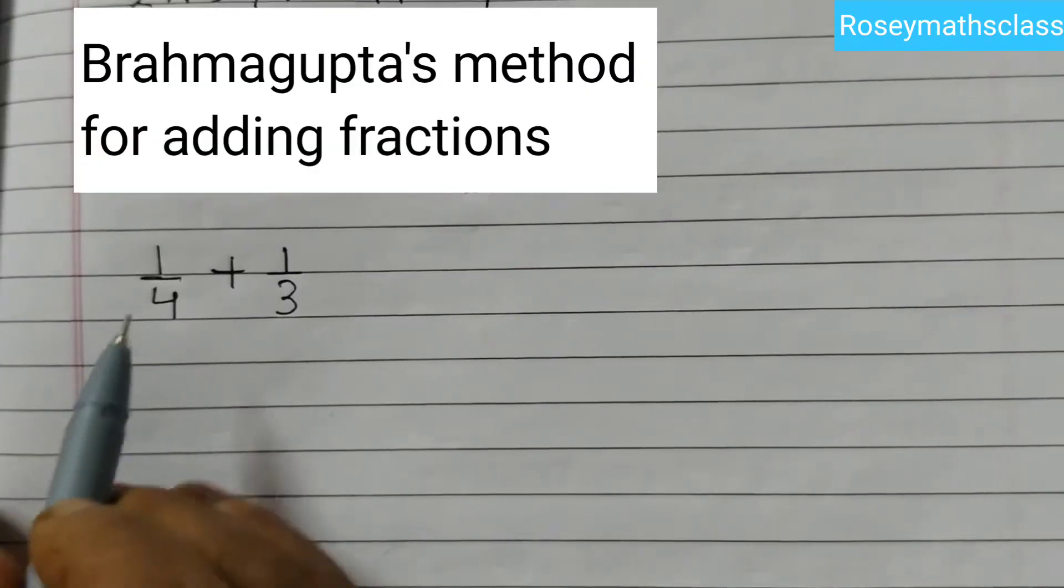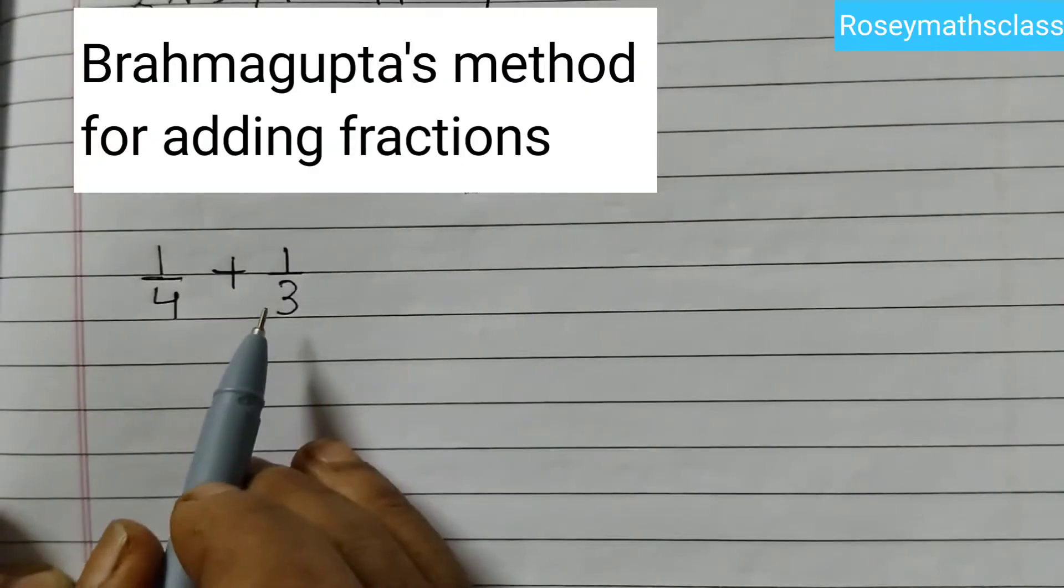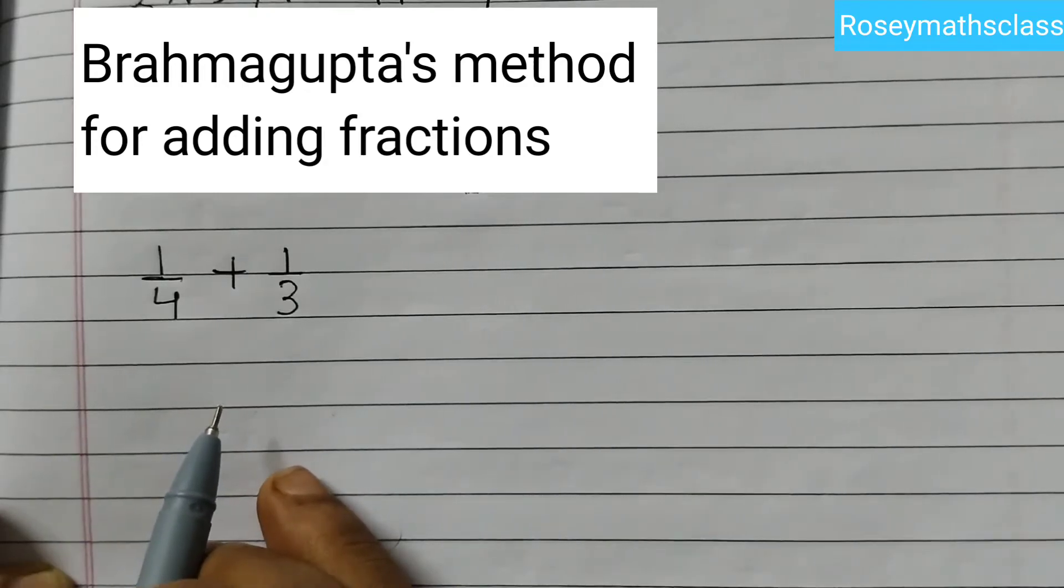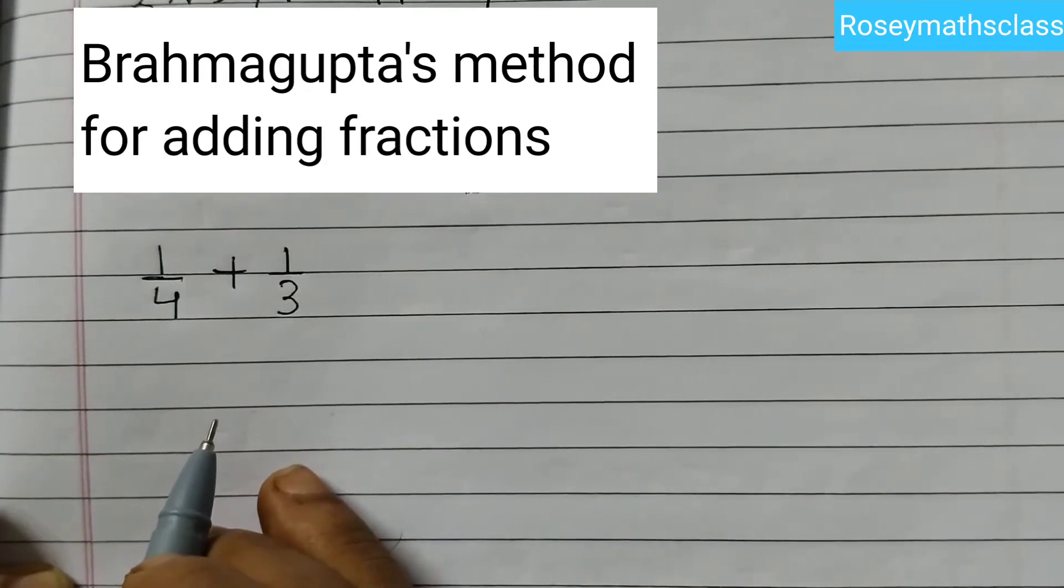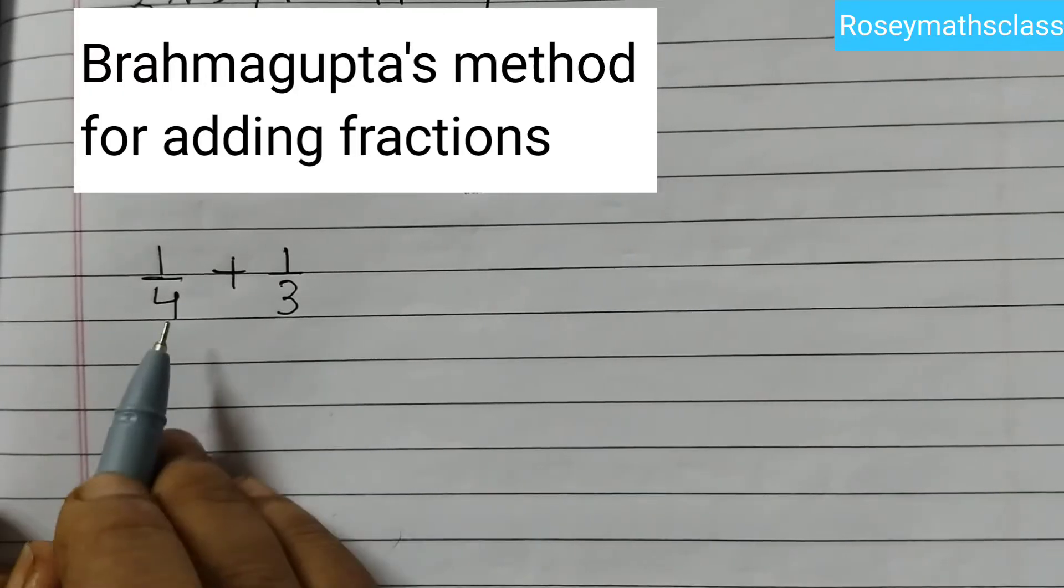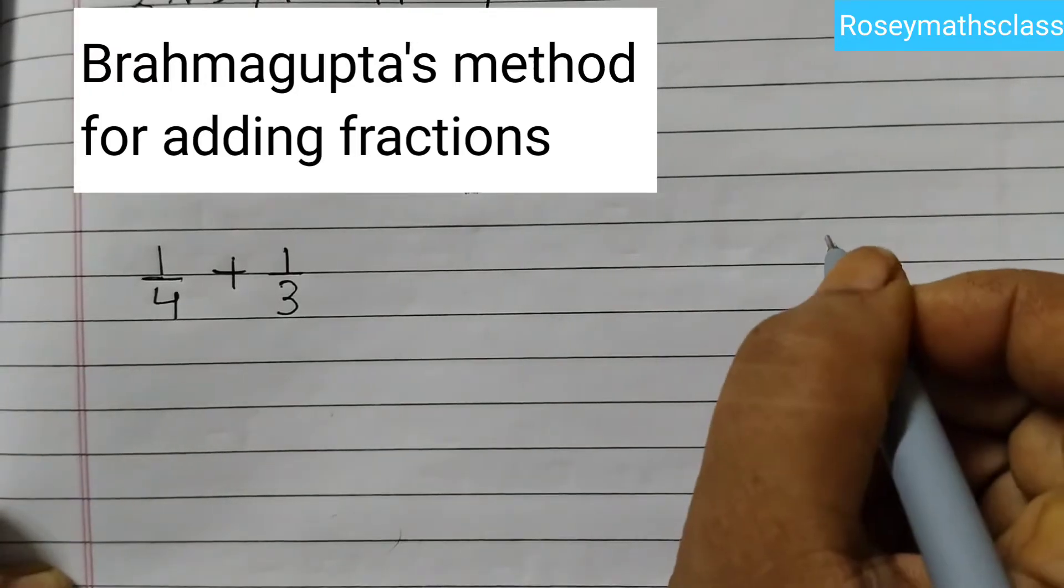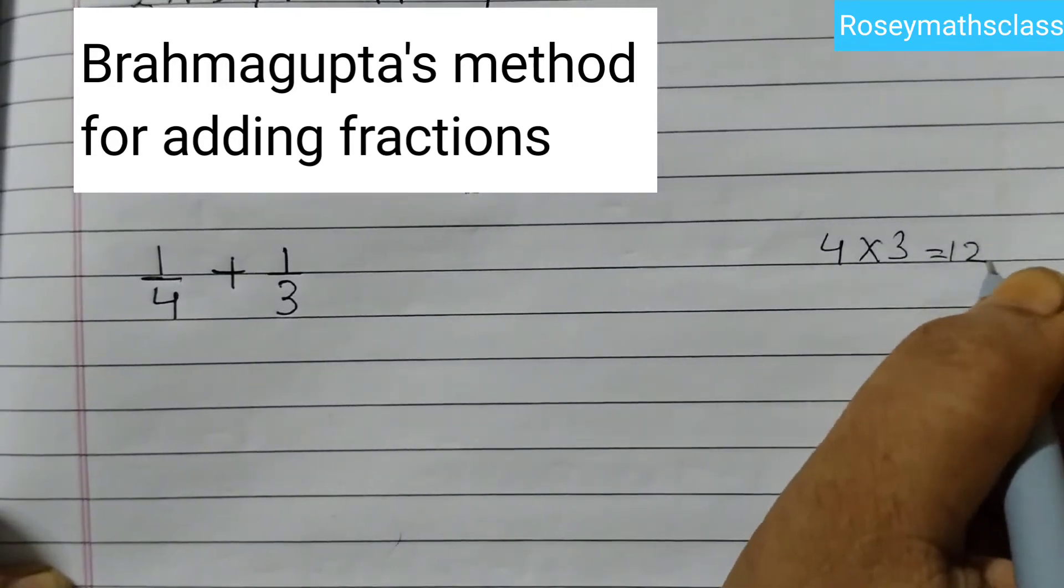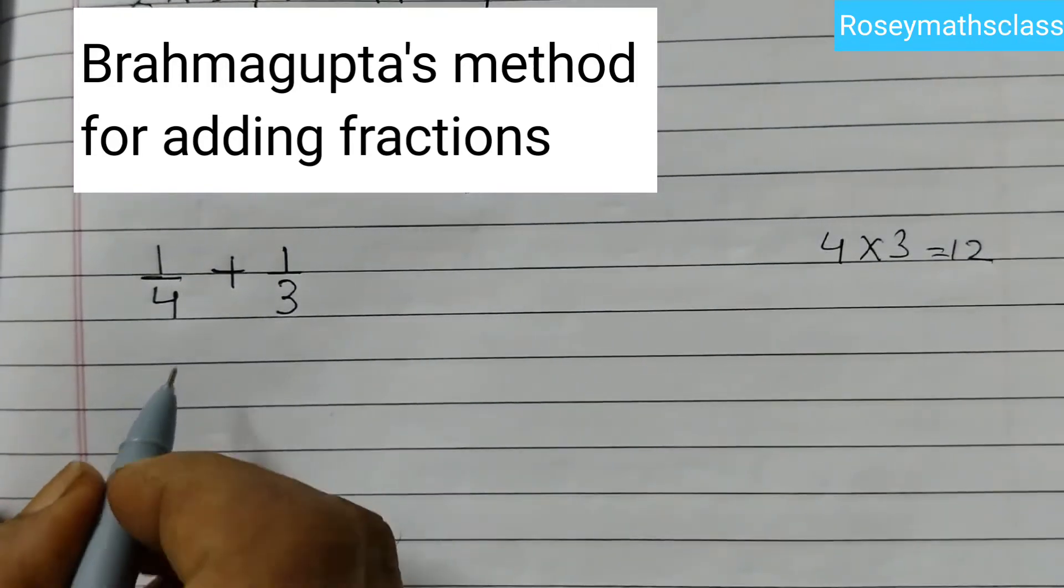First example is 1 upon 4 plus 1 upon 3. How do we add these two fractions? So first we will find the equivalent fractions for these two. So 4 into 3 is 12. We will make the denominator 12.